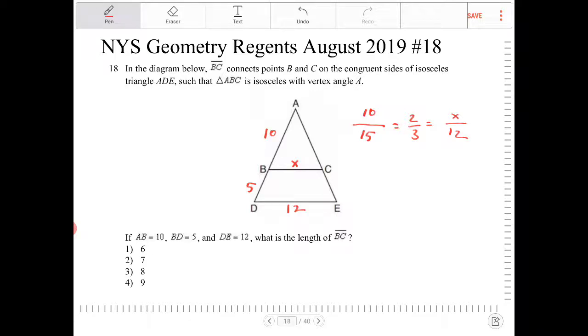So I'm going to cross-multiply, so X will equal 12 times two thirds. I know that 3 goes into 12 four times. So X is equal to 8. So therefore BC is equal to 8, and that's option 3.